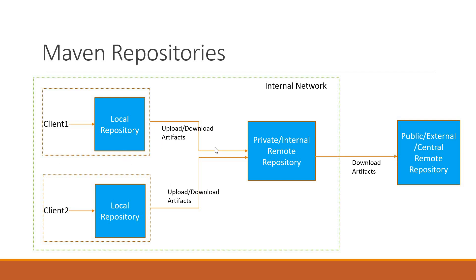So how are the artifacts uploaded or downloaded? For example, if we execute the Maven deploy command in the client-1 machine, the artifact will be installed in the local repository and also in the private or internal remote repository. However, the artifact will not be sent to the public or external repository. When downloading an artifact, it will be downloaded from the private repository. If the dependency is not present in the private or internal remote repository, then the private repository will download the corresponding artifact from the external remote repository and cache it.